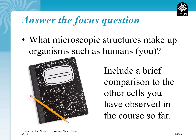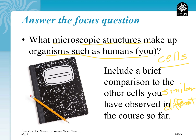We can go back to our focus question: what microscopic structures make up organisms such as humans? A lot of that deals with us as cells — us having cells, plants having cells, protease having cells. You and I share many of the same cell characteristics. We have brain cells, muscle cells, stomach cells, skin cells, and bone cells. How they are similar to other cells and how they are different is a key thing to understand as we go through the rest of these lessons.